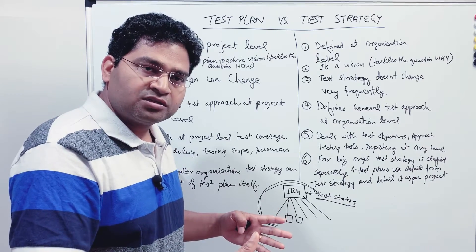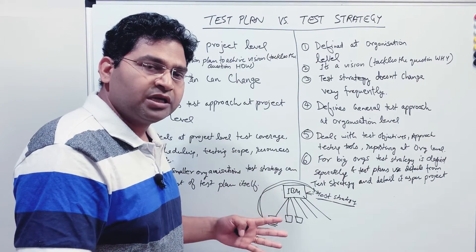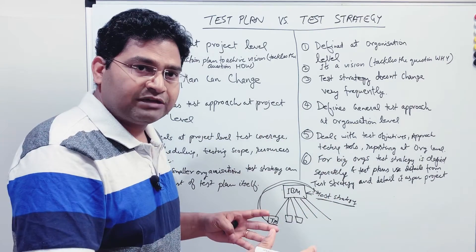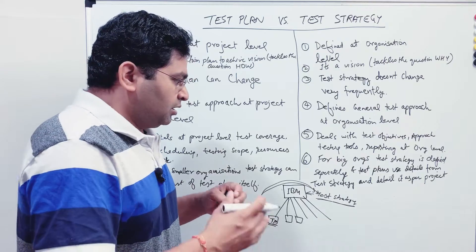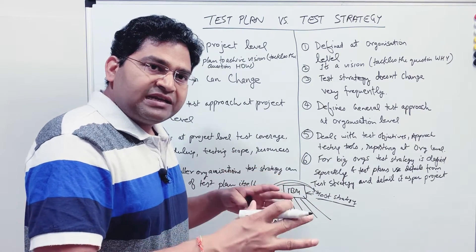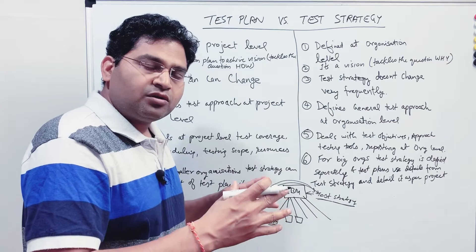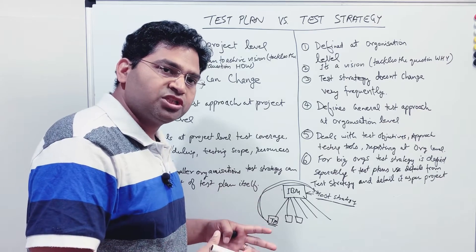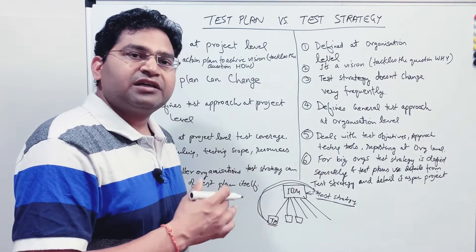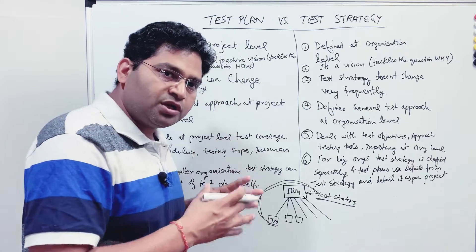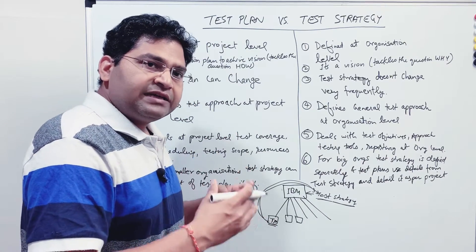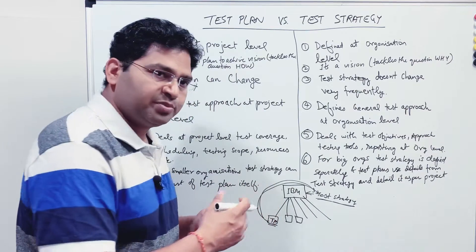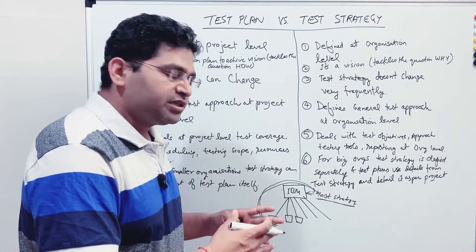In a very large organization like IBM, there can be hundreds of verticals, so there could be hundreds of test strategies across those verticals, but there will also be a common test strategy at the overall org level. When it comes down to the project level, projects refine this strategy as per the project — that is where the test plan comes in.